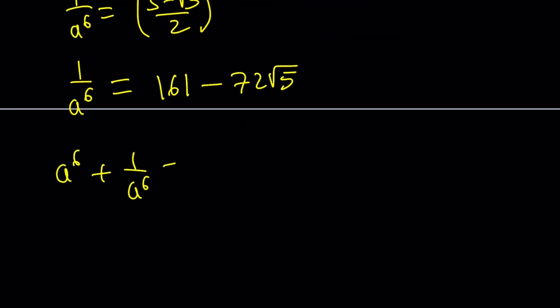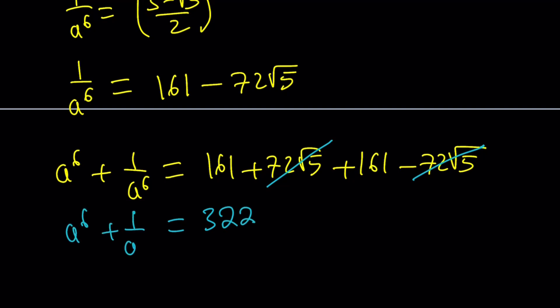a to the 6th plus 1 over a to the 6th is going to be 161 plus 72 root 5 plus 161 minus 72 root 5. What do you do next? Cancel out the radicals, and you end up with the sum of two integers, which is the answer. By the way, this is going to be 322. So this is what we were looking for, and we found it. The answer is an integer. It shouldn't be a surprise, because sometimes radicals tend to disappear.